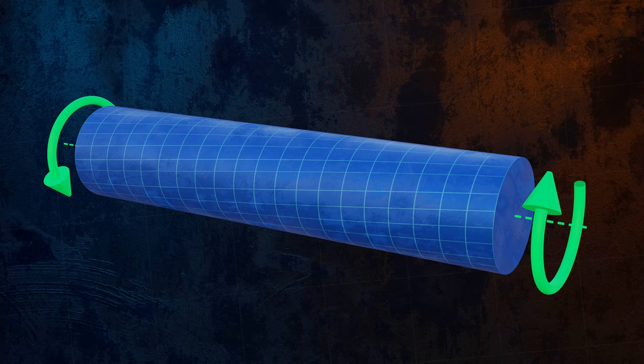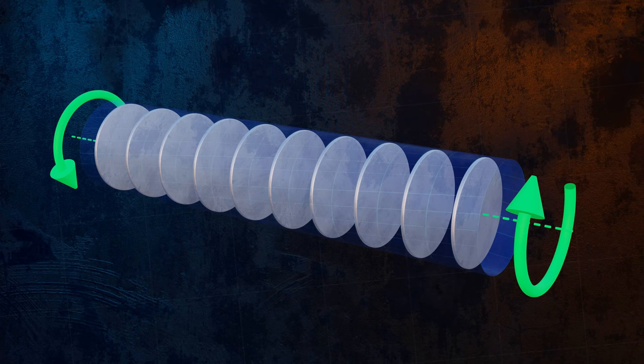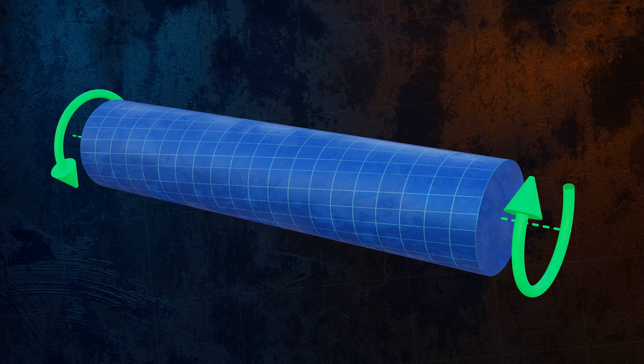We can imagine that the bar is made up of multiple individual discs, which rotate relative to each other when the torque is applied, but do not deform. This is only true because the cross section of the bar is axis symmetric.